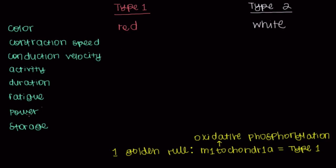What about the speed of contraction? If type 1 muscle fibers rely on mitochondria for energy, think about all the processes involved in oxidative phosphorylation: glycolysis, the Krebs cycle, making NADH and FADH2, all the cofactors for the electron transport chain. There's a lot that has to be done, so mitochondria take a while to make energy. That means the contraction speed of type 1 muscle fibers is slow.